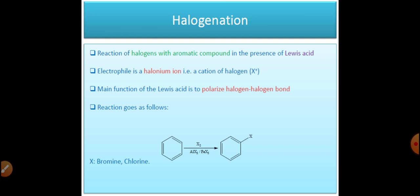This particular halogenation reaction comes under the category of aromatic electrophilic substitution reaction. The mechanism is a typical aromatic electrophilic substitution mechanism in which an electrophile is generated — the halogenium ion, X⁺. In the case of bromination, it will be Br⁺, and in the case of chlorination, it will be Cl⁺, which will be the electrophile for the reaction.